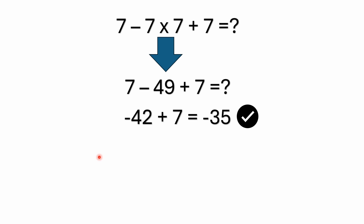We don't have any brackets, parentheses, no exponents, square roots, or anything like that. We don't have any division — we're just going left to right. We have seven minus seven times seven, but we need to do the multiplication first. Why? Because multiplication is shorthand for repeated addition — it's got priority over addition and subtraction. So it's seven times seven, which is 49. And remember, you have a negative sign out here, so it's seven minus 49, and then plus seven.